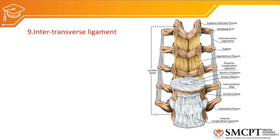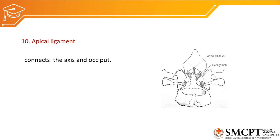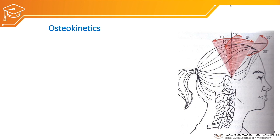Another ligament is the intertransverse ligament, placed between the transverse process of the superior and inferior vertebra. It generates force which prevents excessive side flexion. The tenth ligament is the apical ligament, which connects from the tip of the dens to the occiput. It generates force and prevents flexion at the atlanto-occipital joint.